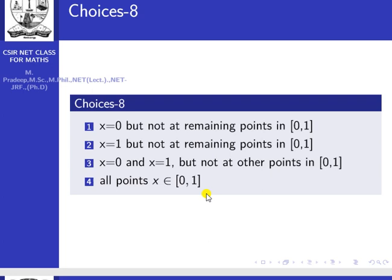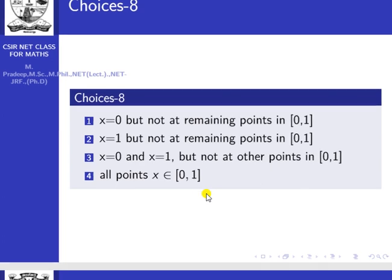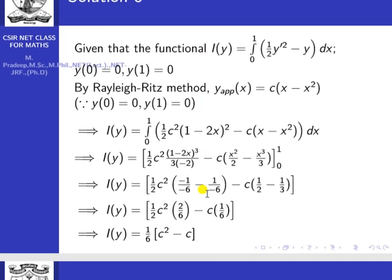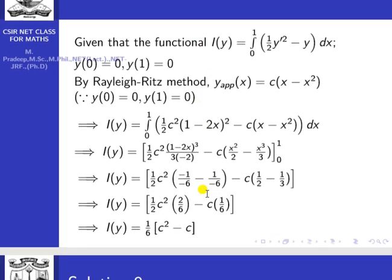To solve this, we find the approximate solution and the exact solution and determine at which particular points they coincide. For the approximate solution, the boundary conditions given are y(0) = 0 and y(1) = 0.